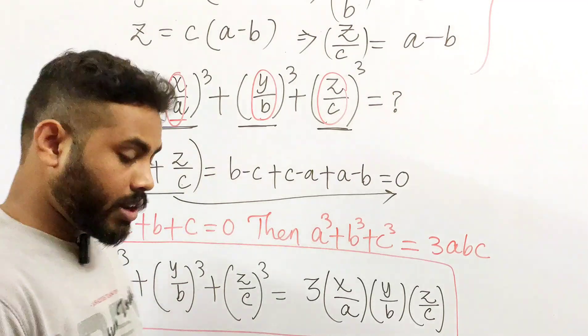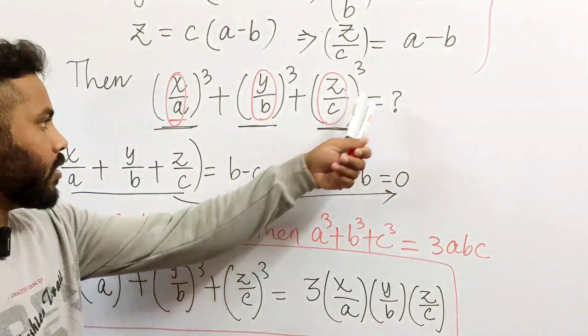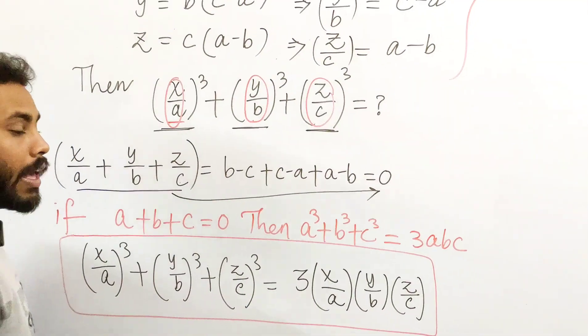All right, this is the final answer. This expression equals 3xyz by abc.